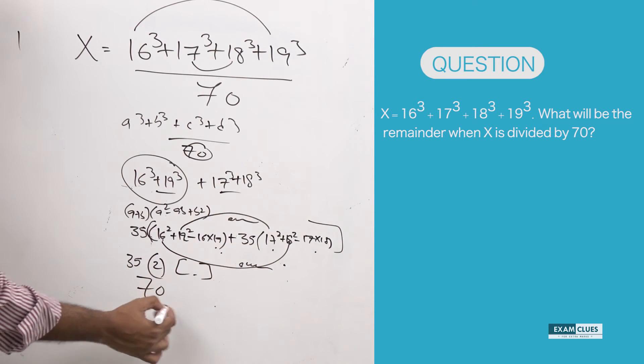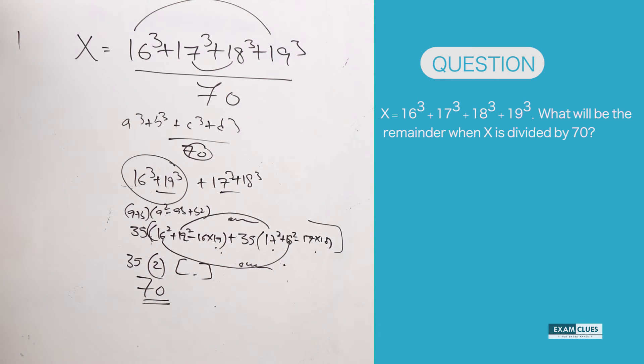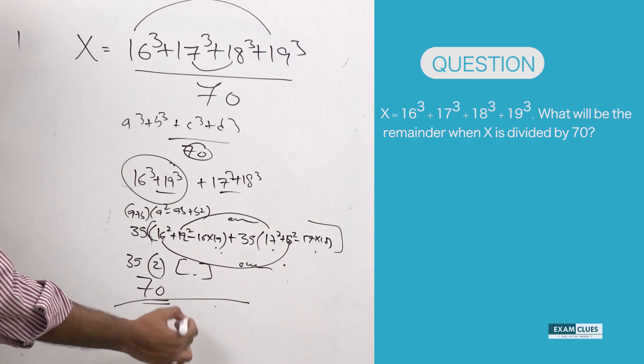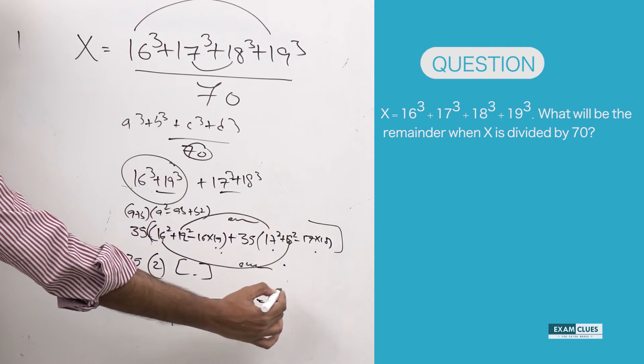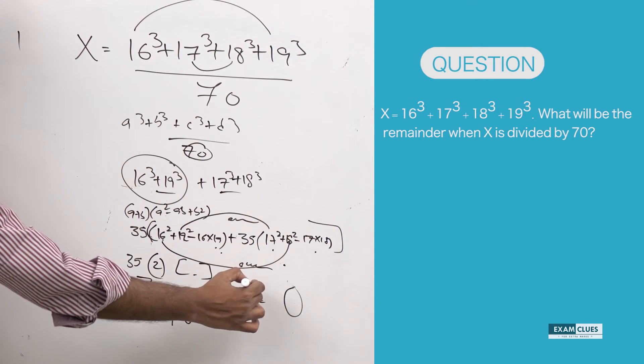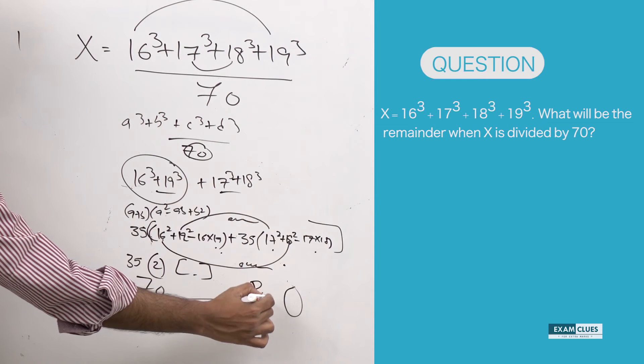So this whole thing is perfectly divided by 70. The remainder is 0. I am saying the remainder is 0. I will explain it once again.